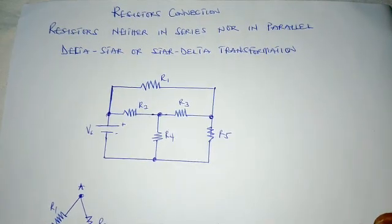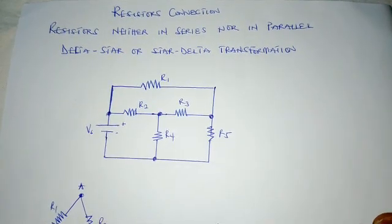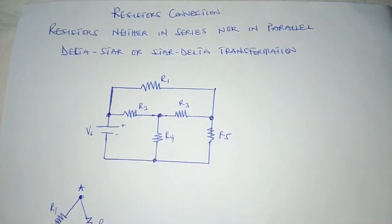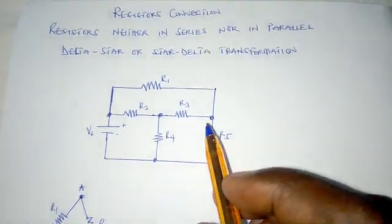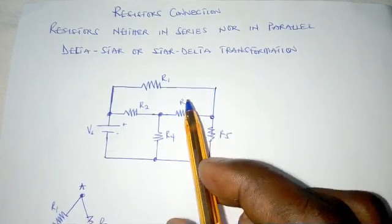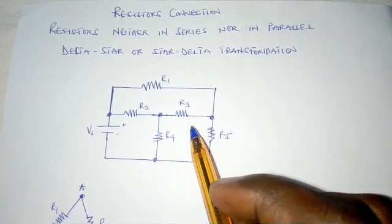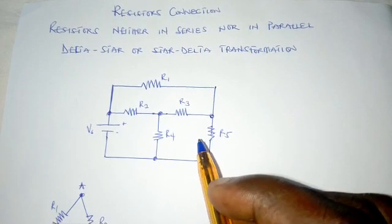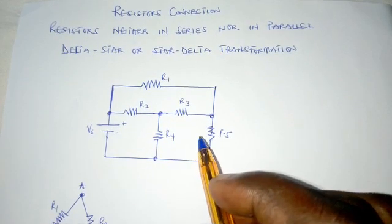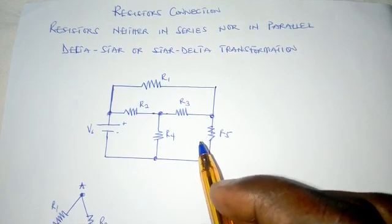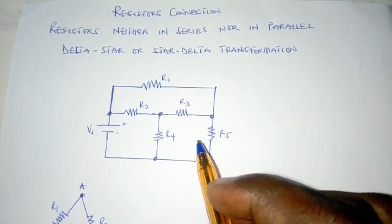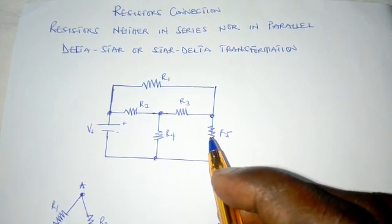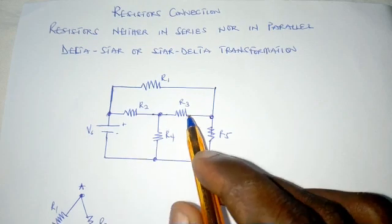Let's consider this circuit over here. We cannot say any two resistors are in series because there is a node between any two of the resistors. And we cannot say any two of the resistors are in parallel because it is not possible to traverse around any two of them without passing through another element.